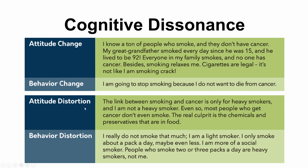For attitude distortion, you might say the link between smoking and cancer is only for heavy smokers and you're not a heavy smoker, or that most people who get cancer don't even smoke — it's the chemicals in food, something else. For behavior distortion, you might say 'I don't really smoke that much, only a couple of cigarettes a day, I'm more of a social smoker.' So you distort your interpretation of your own behavior. This should help clarify the difference between changing and distorting attitudes and behaviors.